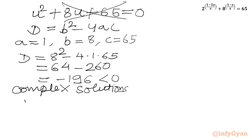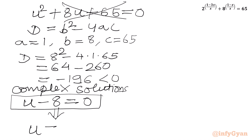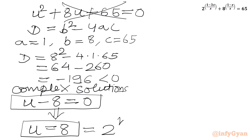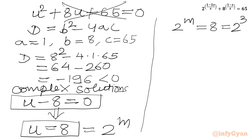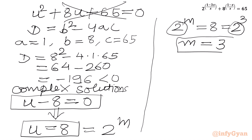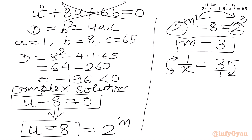From the second equation, u minus 8 equals 0, so u equals 8. Since u was our substitution for 2 raised to m, we write 2 raised to m equal to 8, which equals 2 cubed. The bases are the same, so we compare exponents: m equals 3. Since m was our substitution for 1 over x, we write 1 over x equal to 3. Taking the reciprocal of both sides gives our final answer: x equal to 1 over 3.